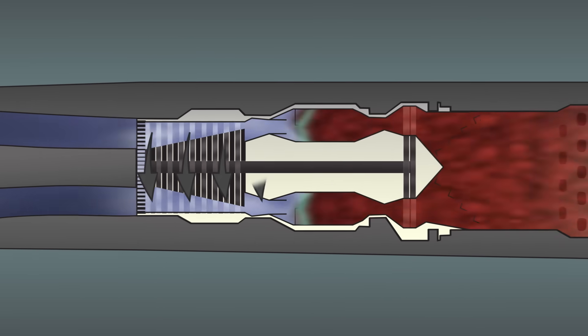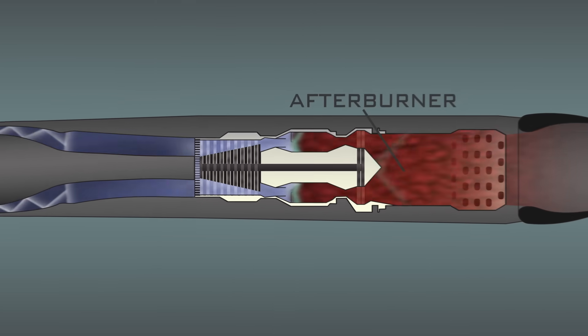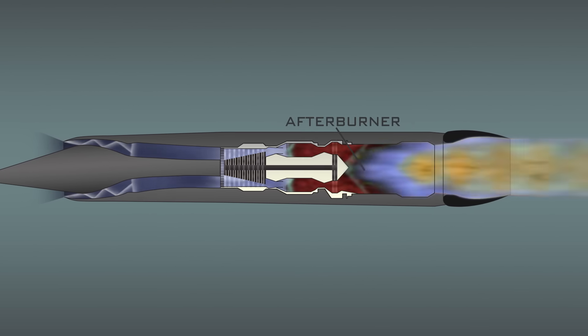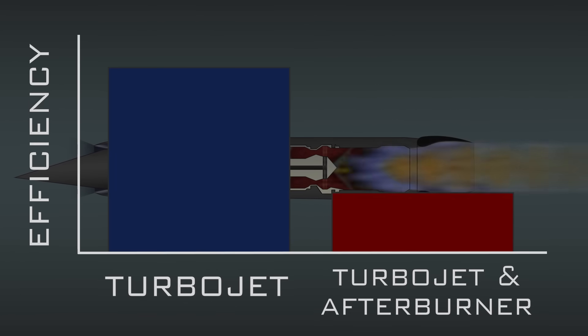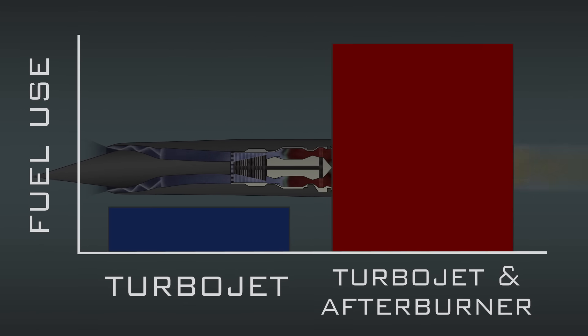Just after the turbine is the afterburner, where more fuel is added to the exhaust in order to get as much of the oxygen out of the air as possible. While afterburners allow for powerful bursts of acceleration, they're really inefficient, costing huge amounts of fuel for the increased force.